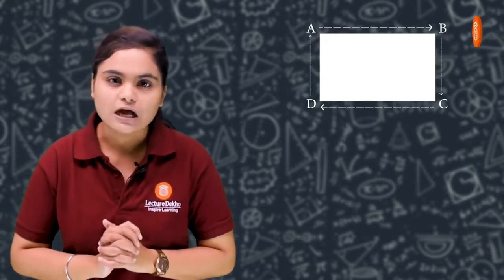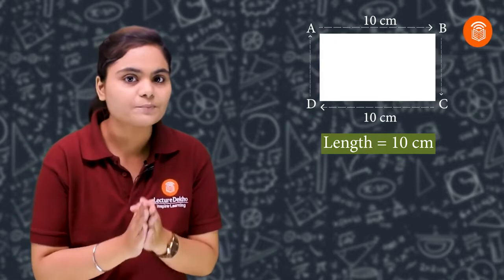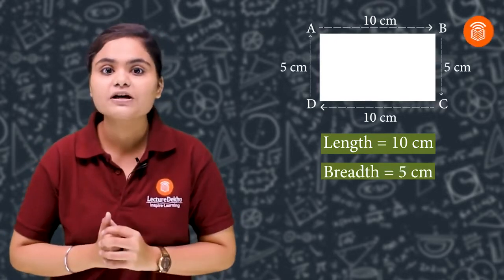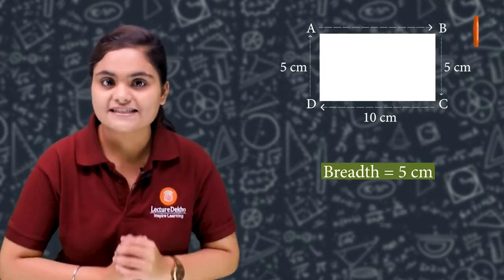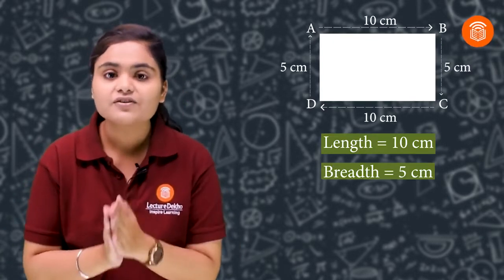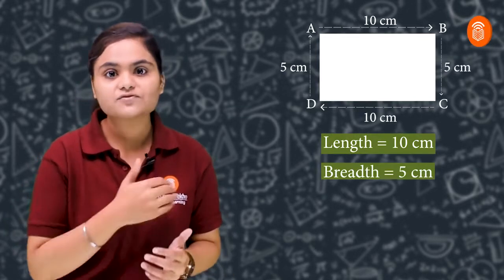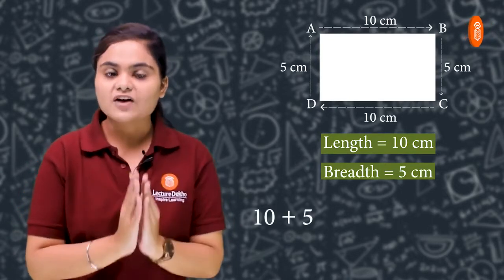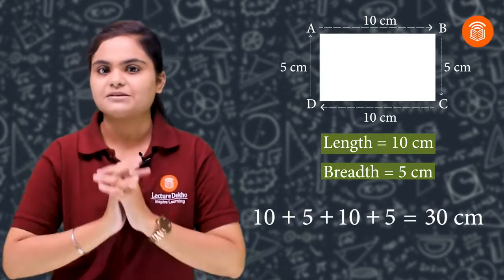Suppose students, the ground length is 10 cm and breadth is 5 cm. Then I have to add the length of all sides: 10 cm plus breadth of the ground. So, 10 plus 5 plus 10 plus 5 is equal to 30 cm.